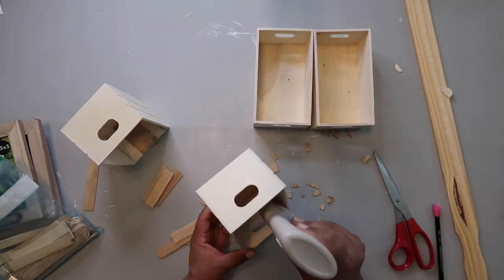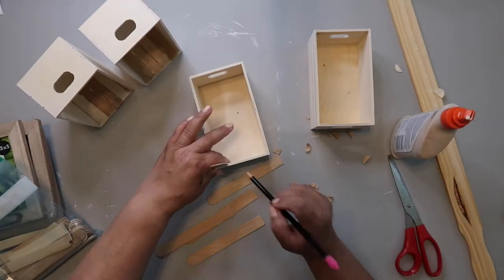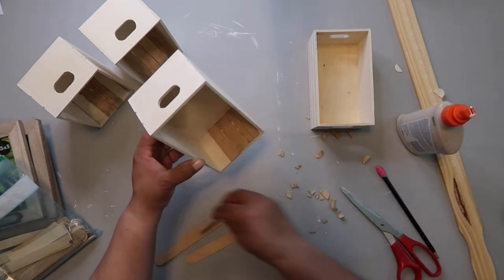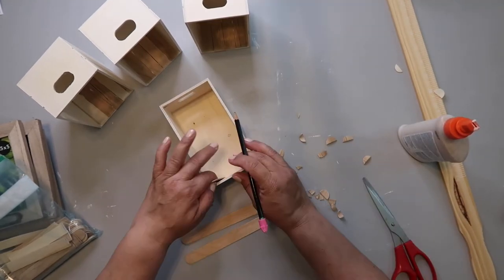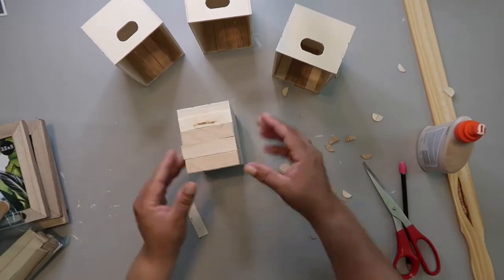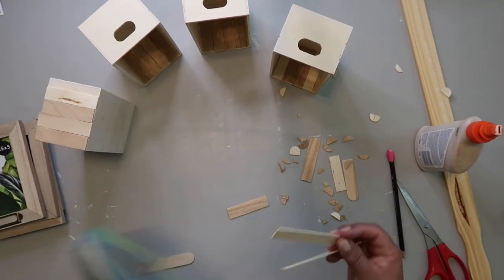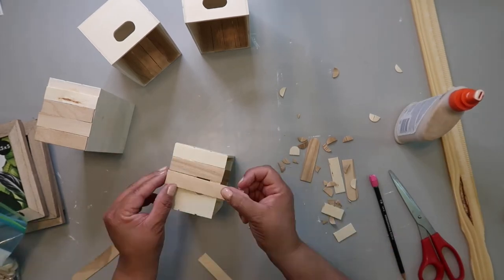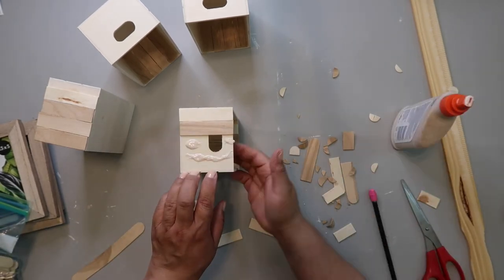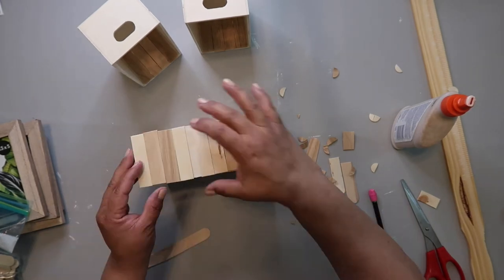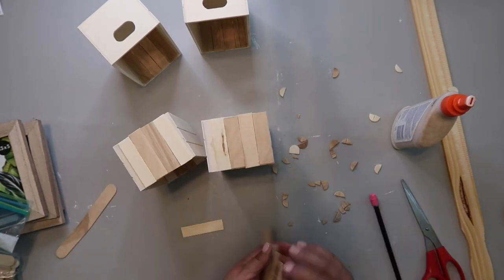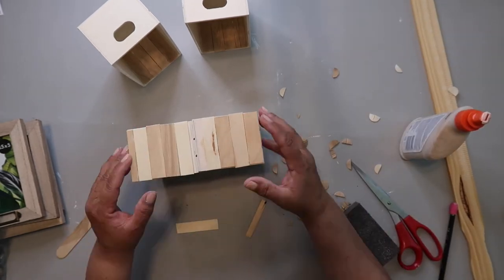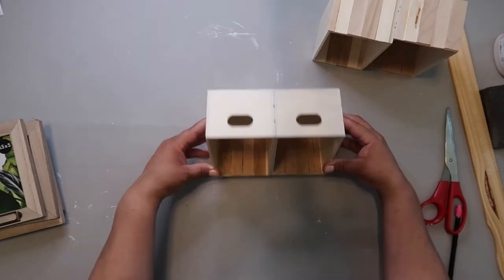So cutting the popsicle sticks down to size and then using the Elmer's Wood Glue Max to glue those inside of the little crates. Because I don't want you to see the top where it's got a hole in the top, I'm going to be cutting some of these popsicle sticks down to kind of make a top to it, if you will. And I'm leaving a little bit of a gap because when I glue them together, I'll put the final popsicle stick in place at that time. And so I'm doing that for both of the top pieces.